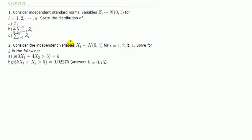Consider the independent variables xi, where each of these xi's are normally distributed with the mean of 0 and the variance of 4. And we've got 4 variables as xi goes from 1 to 4. Solve for k in the probability of 3 times x1 plus 4 times x2 bigger than 5 is equal to k.